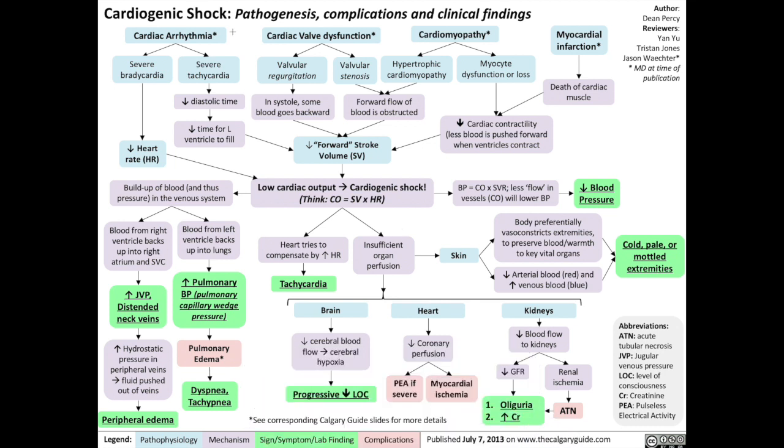Cardiogenic shock is different from obstructive shock because whereas in obstructive shock blood is prevented from entering the heart, in cardiogenic shock the heart receives a normal volume of blood but simply can't pump it out.